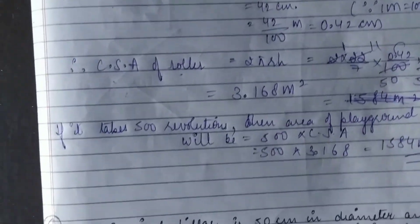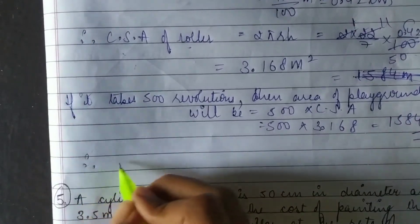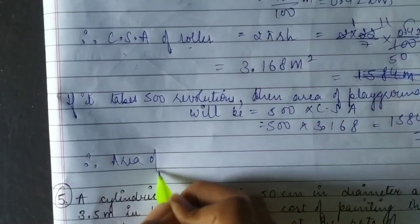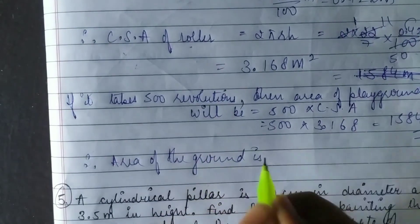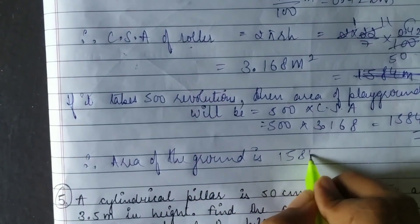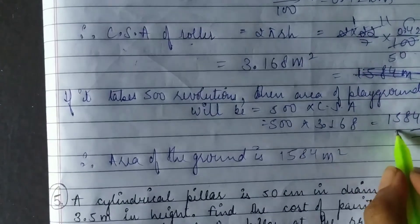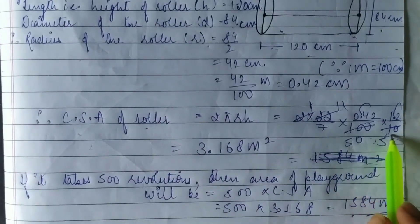Therefore, the area of the ground is 1584 meter square. You can multiply it directly or do it separately. Thank you.